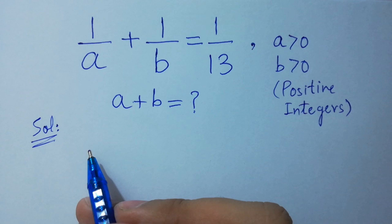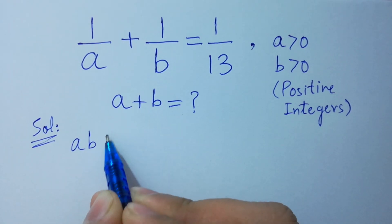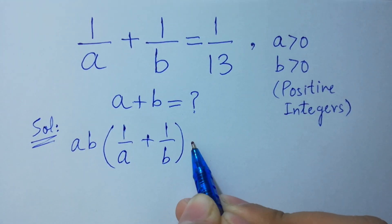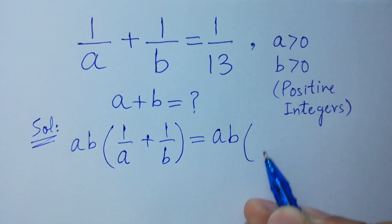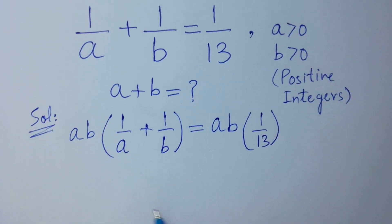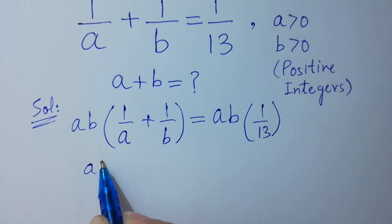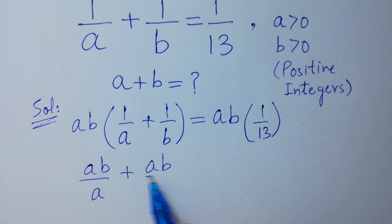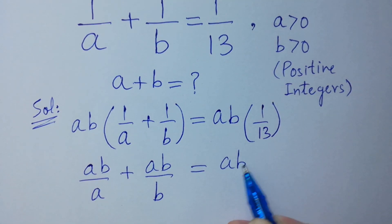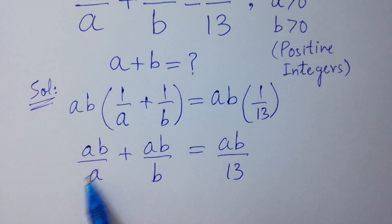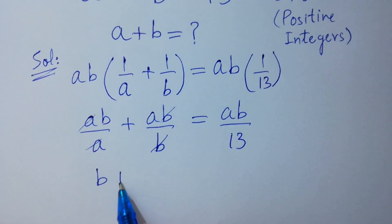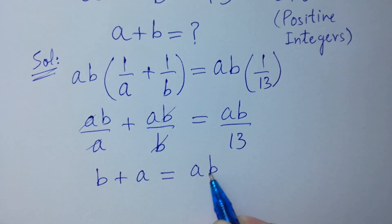To solve this, first of all multiply on both sides by ab. We get ab times 1 over a plus ab times 1 over b equals ab over 13. Here, a and a will be cancelled, b and b will be cancelled. We get b plus a equal to ab over 13.